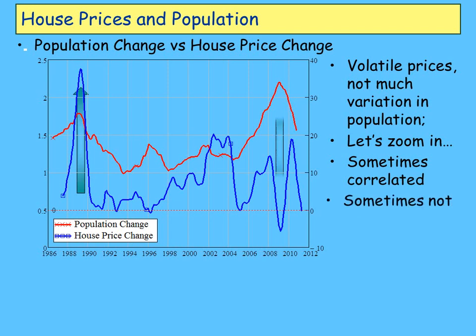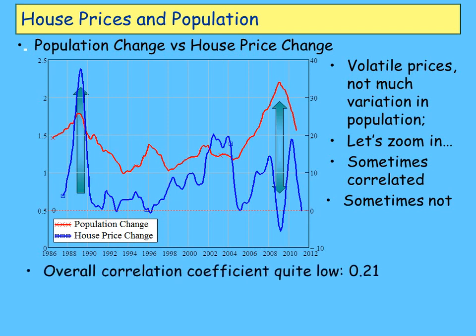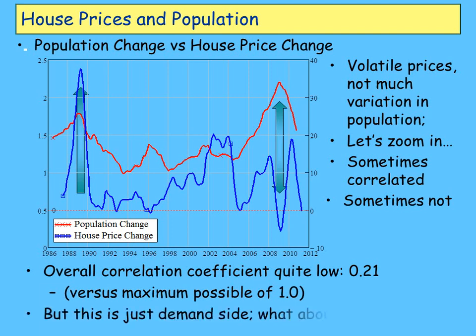You can see there's a bit of change in the rate of growth of population at various times. But sometimes it's correlated with change in house prices. You look back at the 88 period, and you could make a case that rising population caused the house price boom under Paul Keating — I'd blame the first time buyer's boost he reintroduced at the time. Sometimes they're not correlated, and funnily enough, they're not correlated right now, despite a very large increase in population. The overall correlation is 0.21 — pretty low.